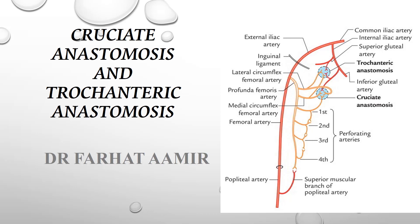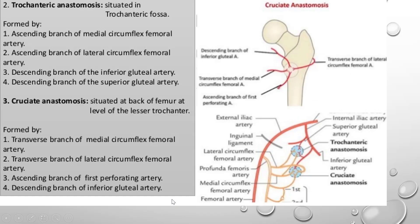Today we will discuss cruciate anastomosis and trochanteric anastomosis. There are two anastomoses at the neck or head of the femur — around the lesser trochanter and greater trochanter.